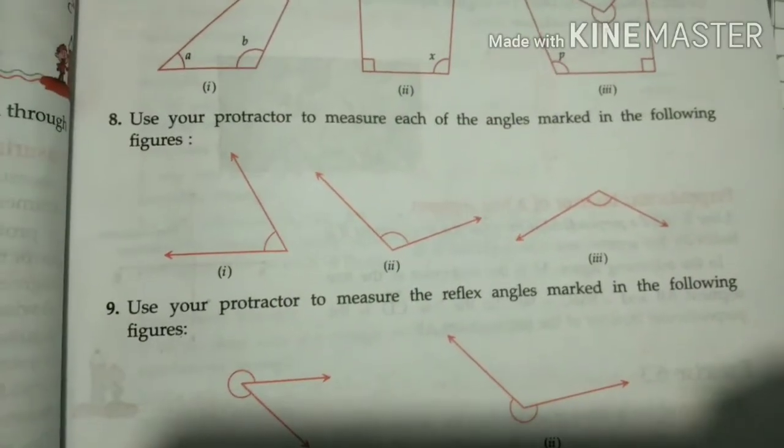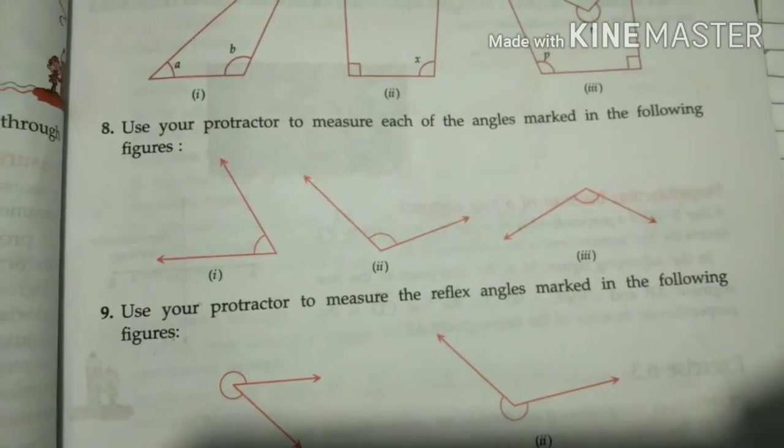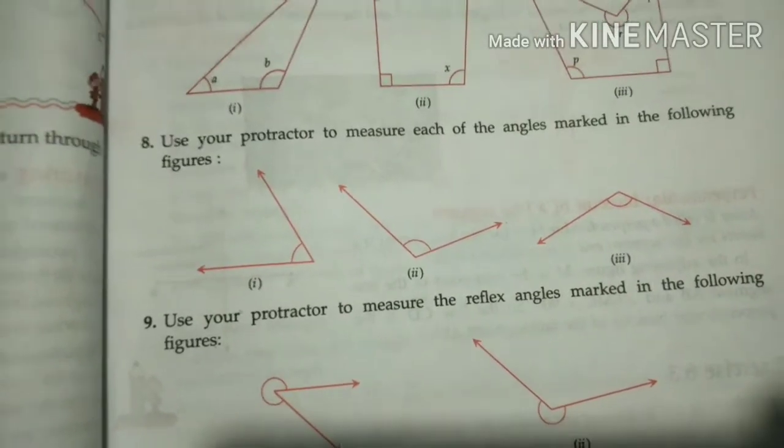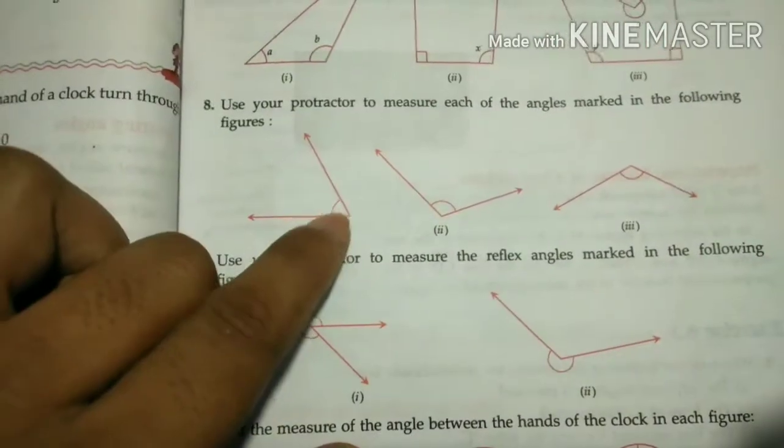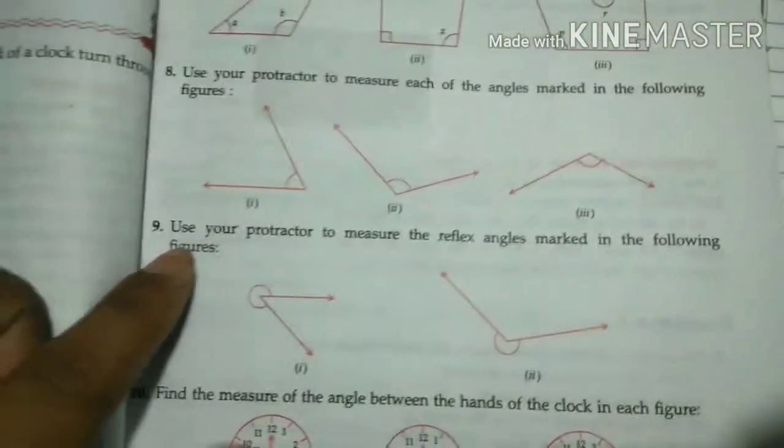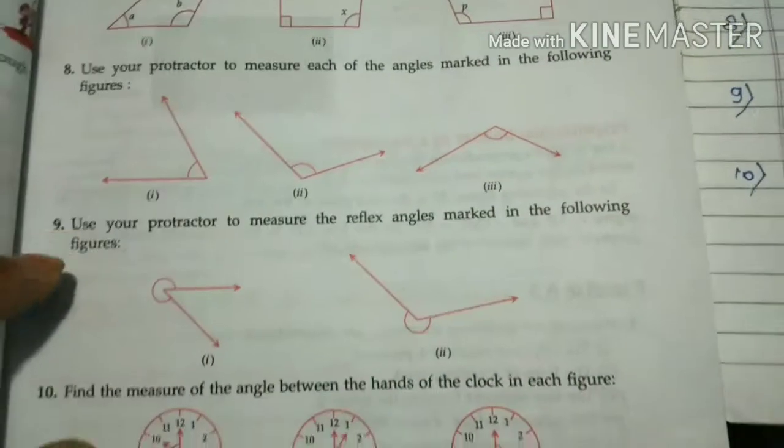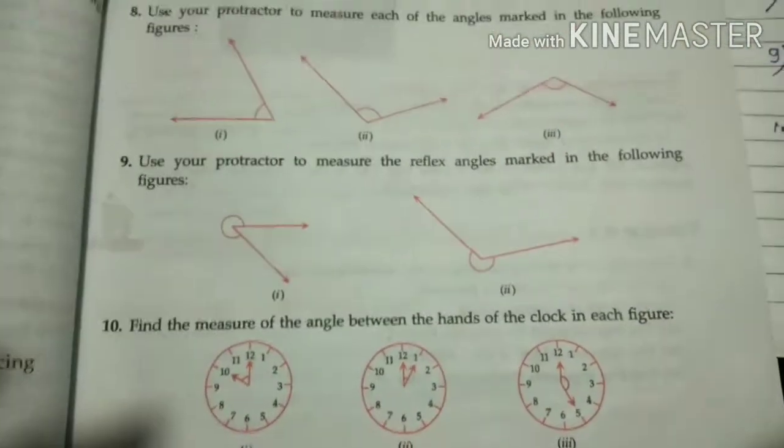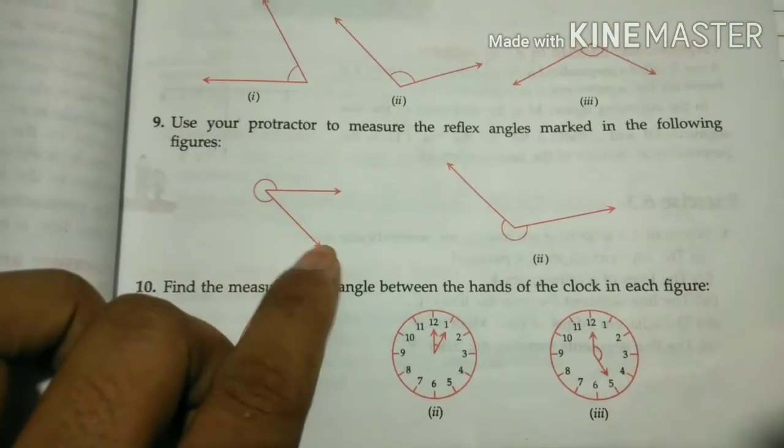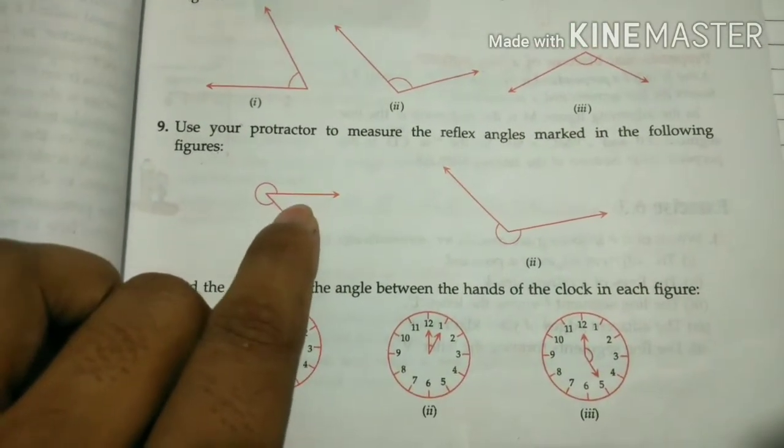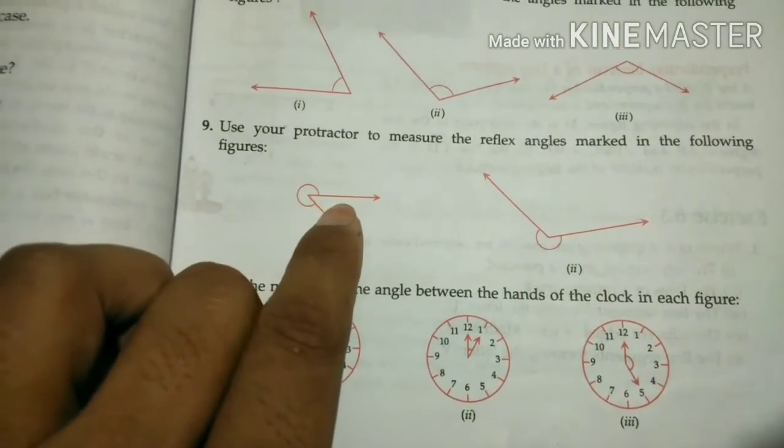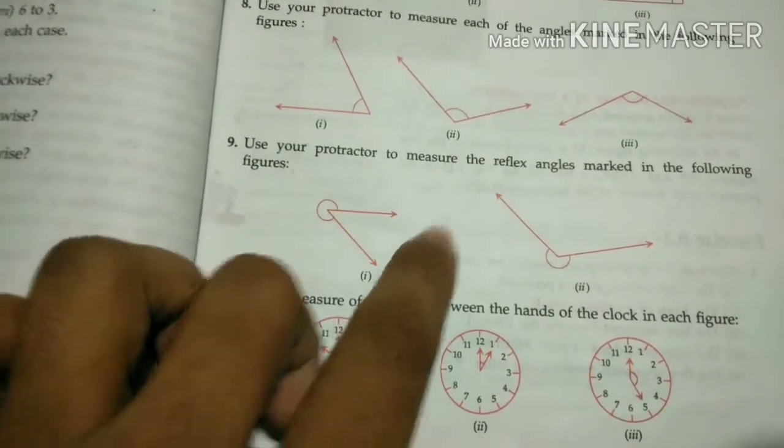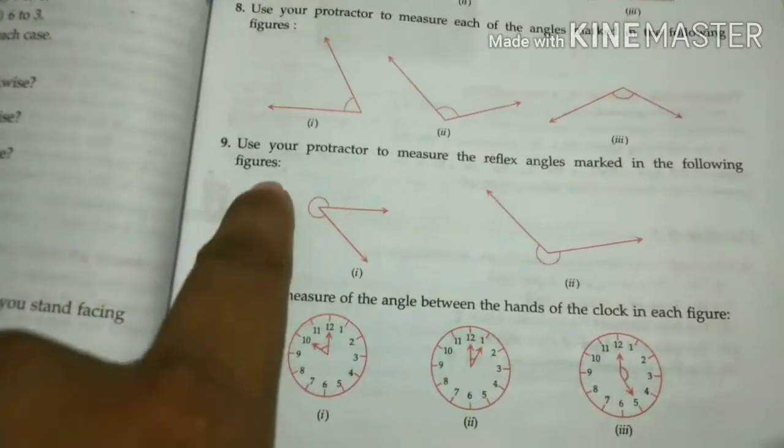Question number 8: use your protractor to measure each of the angles marked in the following figures. This part, do it yourself - take your protractor and measure the angles given here. Question 9: use your protractor to measure the reflex angle marked in the following figure. To find the reflex angle, first measure the small angle, then subtract it from 360 degrees.